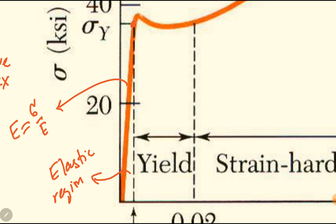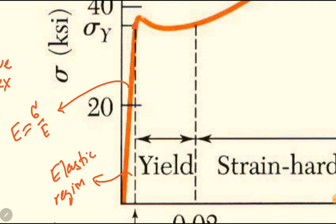Between upper yield and lower yield, as discussed earlier, the atomic structure shifts from one equilibrium state to another equilibrium state. This transition region is called the yielding region.